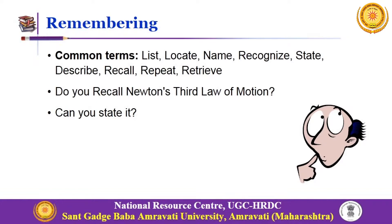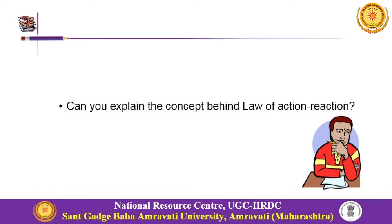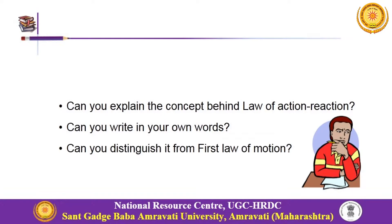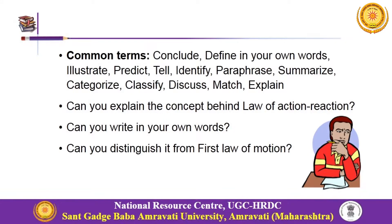For the same topic, when my learners are able to explain the concept behind the law of action and reaction, write the law in their own words, and distinguish the third law of motion from the first law of motion — and as a teacher we ask them to illustrate, predict, identify, paraphrase, summarize, and categorize information related to the third law — that is called the understanding level of cognitive learning.